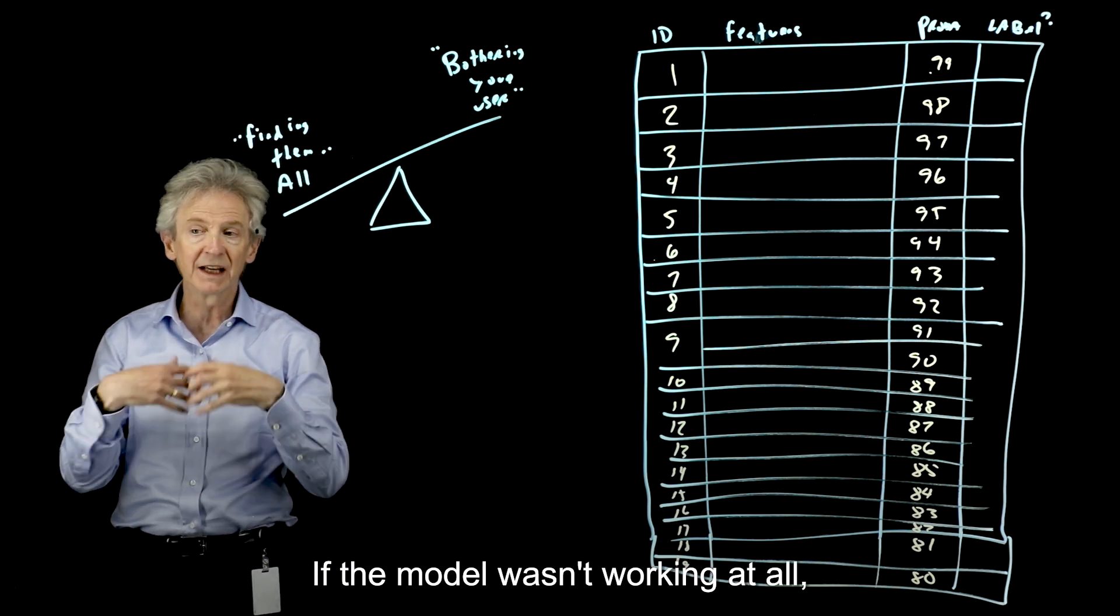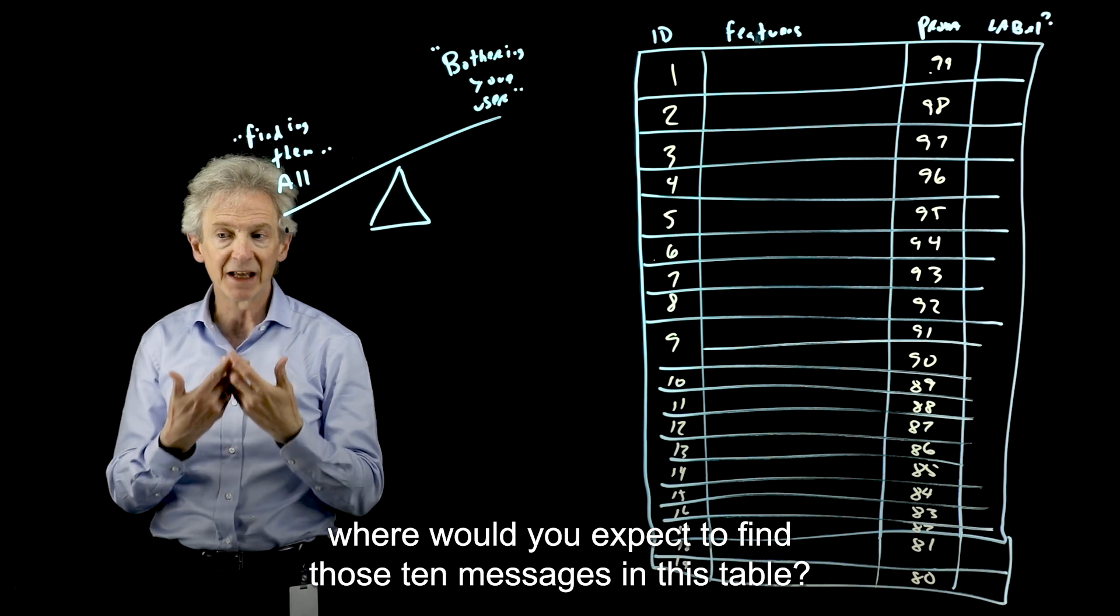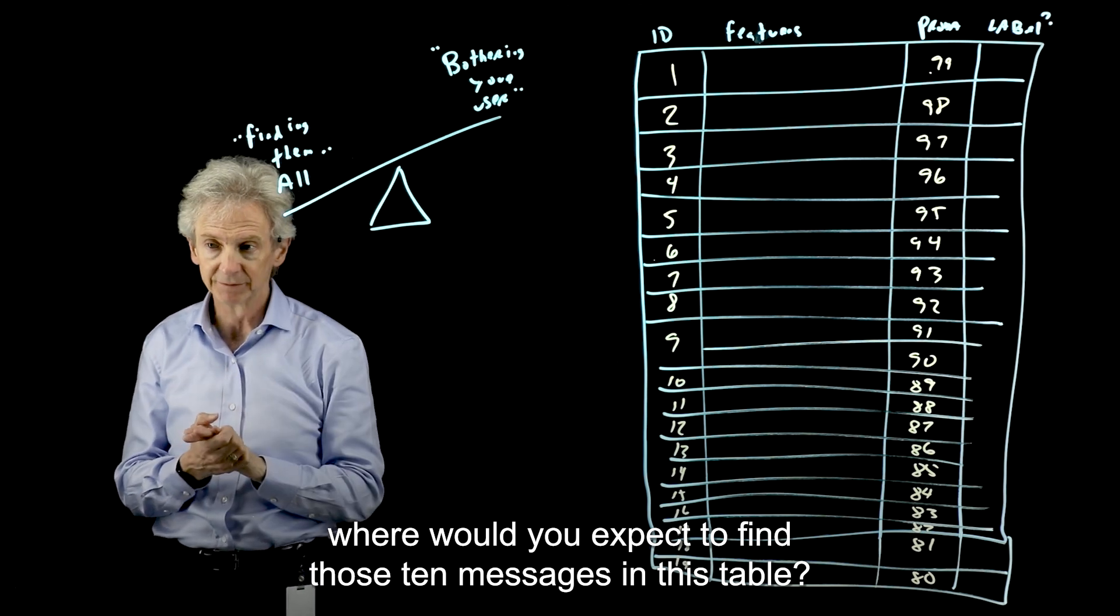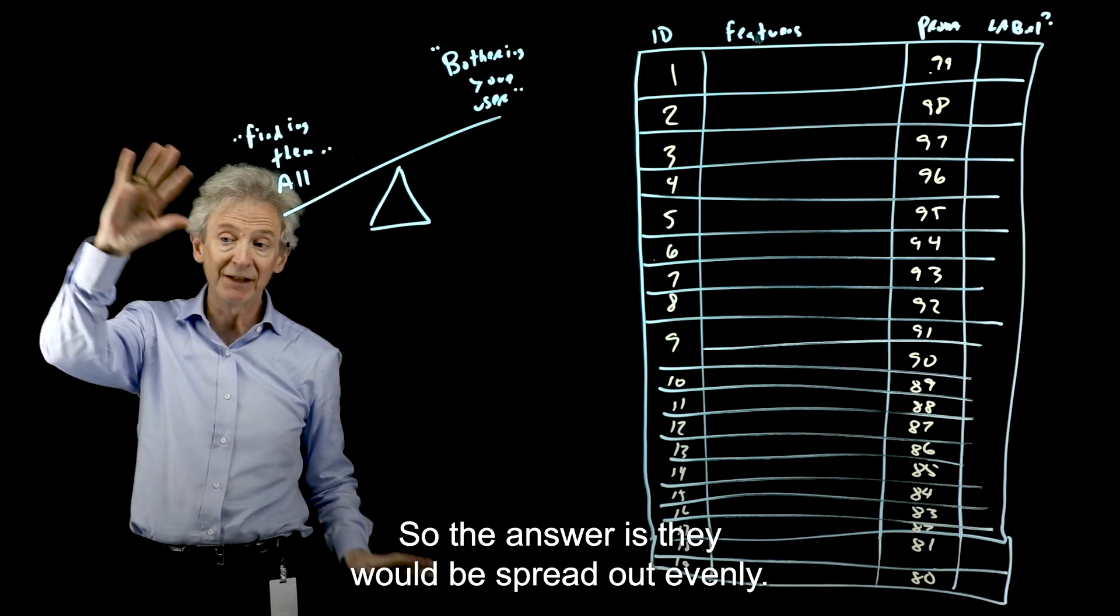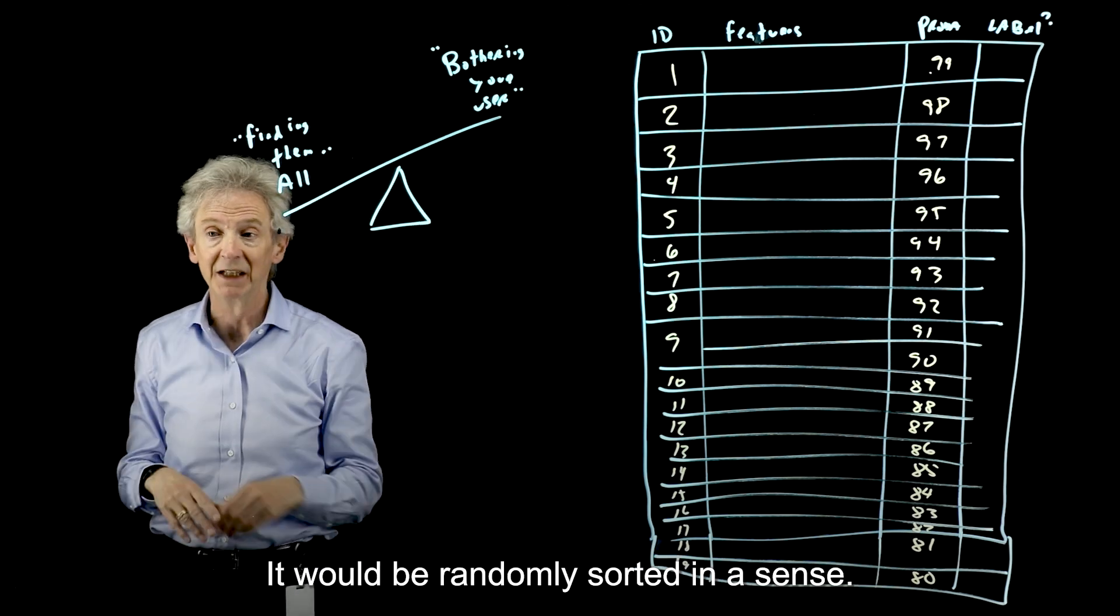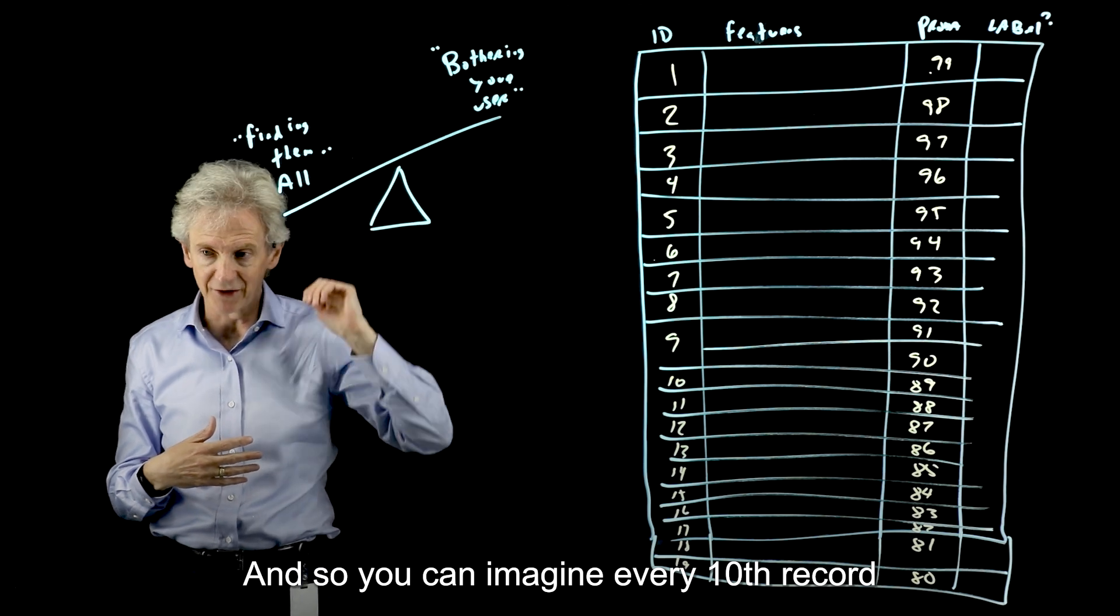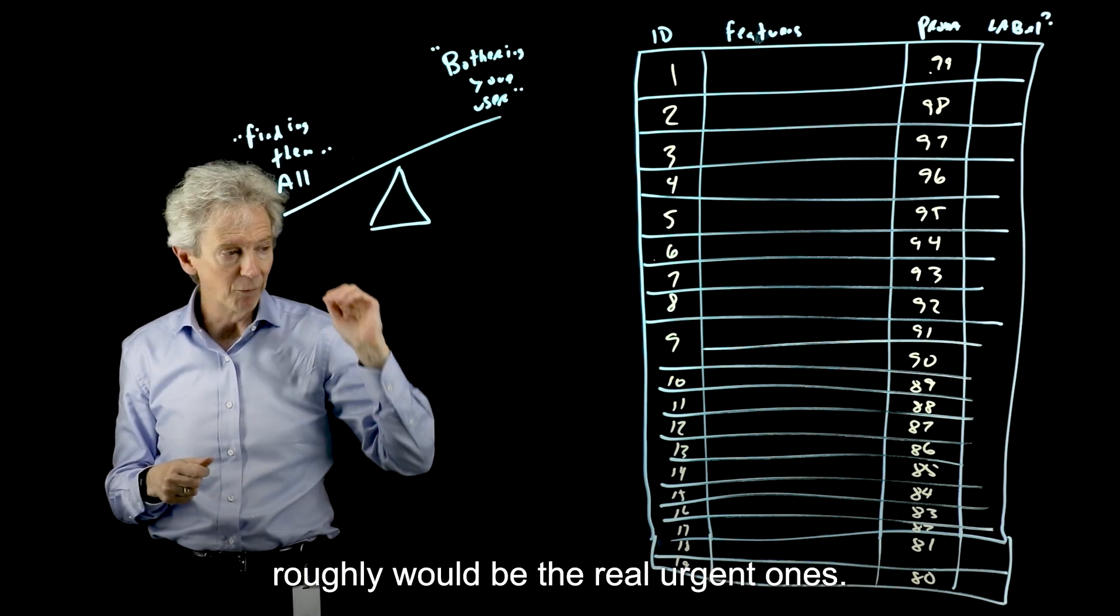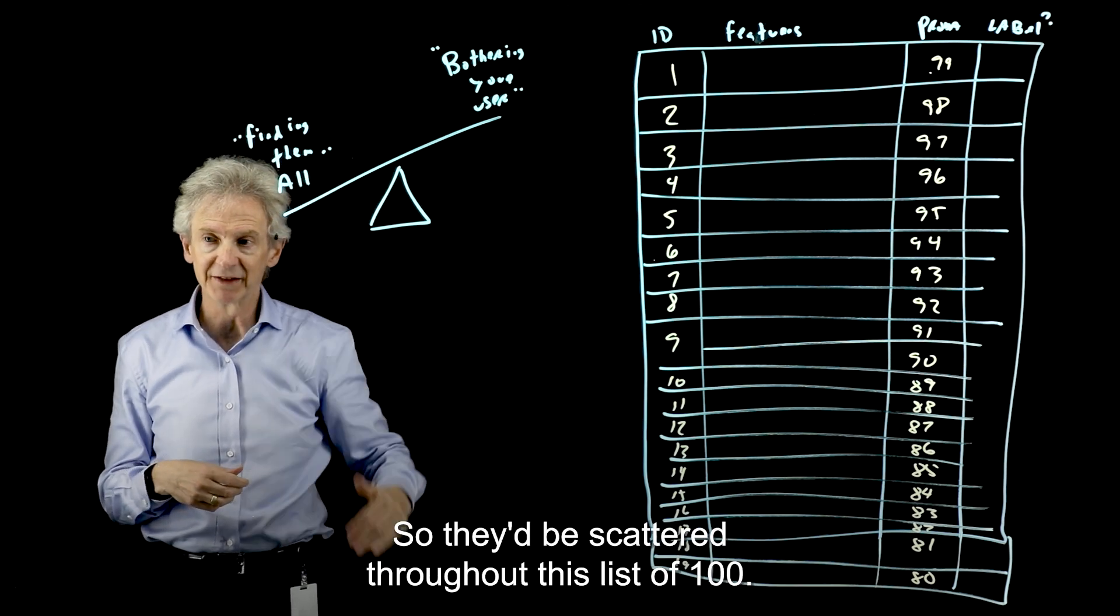If the model wasn't working at all, where would you expect to find those 10 messages in this table? So the answer is they would be spread out evenly. If the model wasn't working at all, the probability column would be kind of random. It would be randomly sorted in a sense. And so you can imagine every 10th record, roughly, would be the real urgent ones. So they'd be scattered throughout this list of 100.